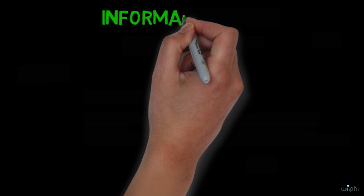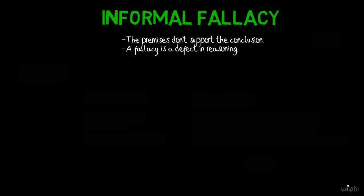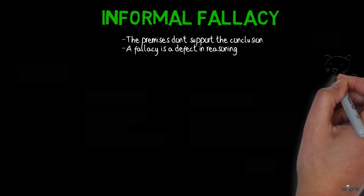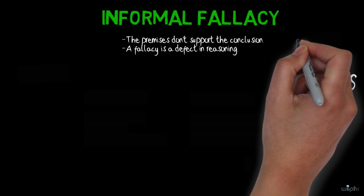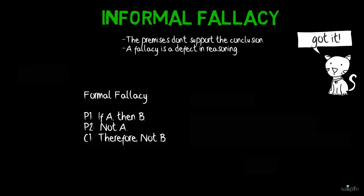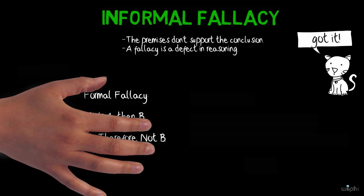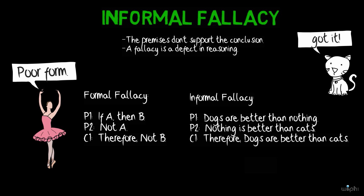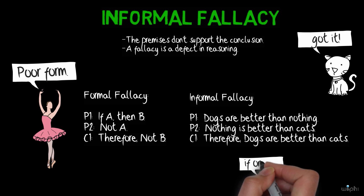To recall, an informal fallacy is an argument whose premises do not support its conclusion. Generally, a fallacy is a defect in reasoning. And there are two types of fallacies, formal and informal. A formal fallacy is an argument with an error in the form of the argument. And an informal fallacy contains an error in the content of the argument. But you can learn more about this and the distinction in the video about informal and formal fallacies, which should be out soon.